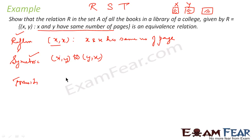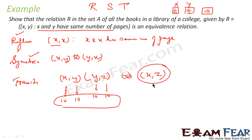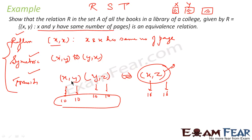For transitive: if (X, Y) and (Y, Z) are members — meaning X and Y have the same number of pages, say 10, and Y and Z also have 10 pages — then X, Y, and Z all have the same number of pages. So (X, Z) is also a member. It is transitive. Therefore, the relation is an equivalence relation — reflexive, symmetric, and transitive.